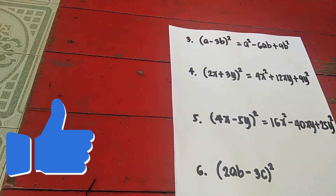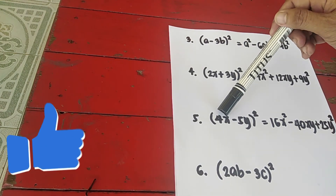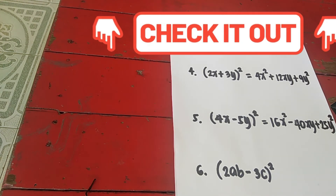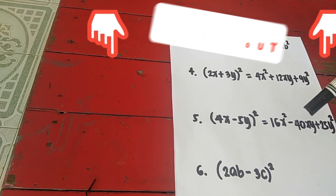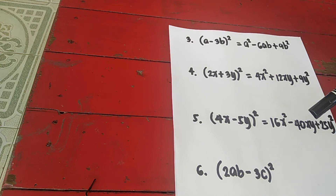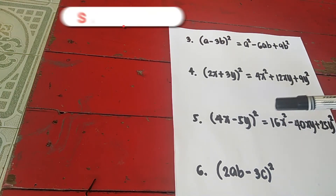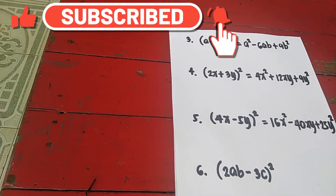To repeat: 4x times 4x is 16x squared. Then 4x times 5 is 20, times 2 gives 40xy — the sign is minus. The third term is always positive — square 5y: 5 times 5 is 25, y times y is y squared. So the answer is 16x squared minus 40xy plus 25y squared.